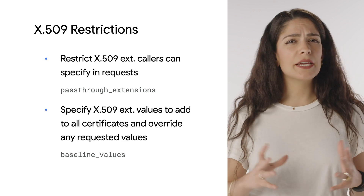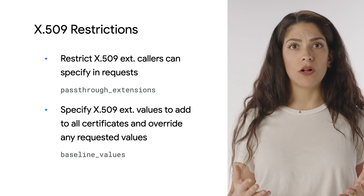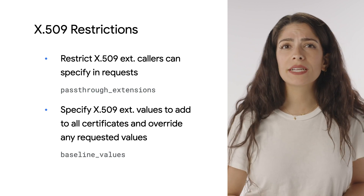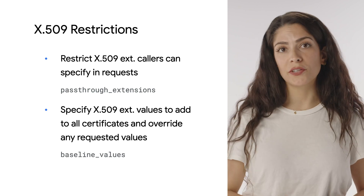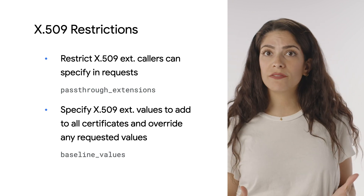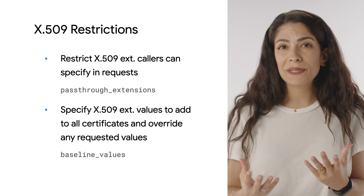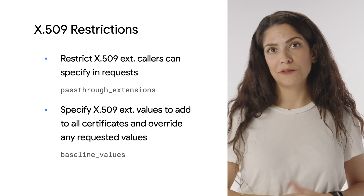Now let's take a look at some supported issuance policy restrictions that you can combine to build an issuance policy. For example one, we'll take a look at restricting or forcing allowed X.509 values. A CA pool can restrict which X.509 extensions can be specified by callers in certificate requests by configuring the pass-through extensions field. It can also explicitly specify X.509 extension values to be added to all its issued certificates, overwriting any requested values by using the baseline values field.